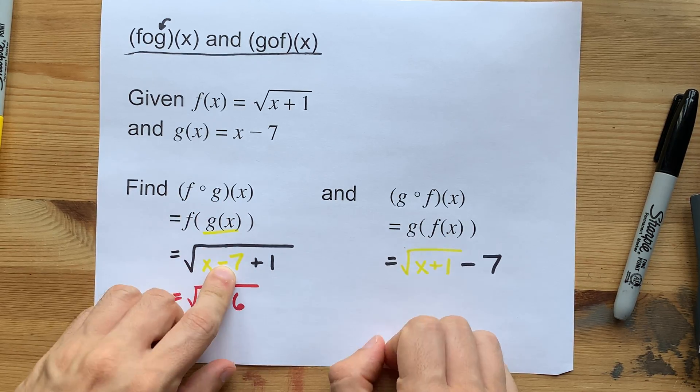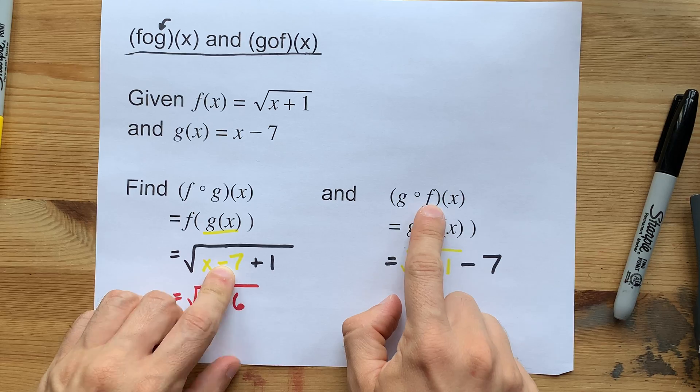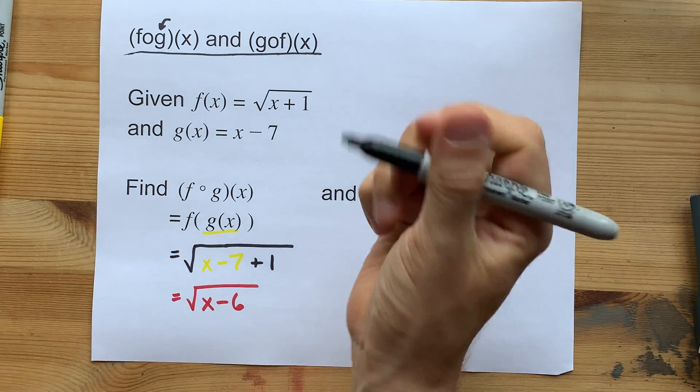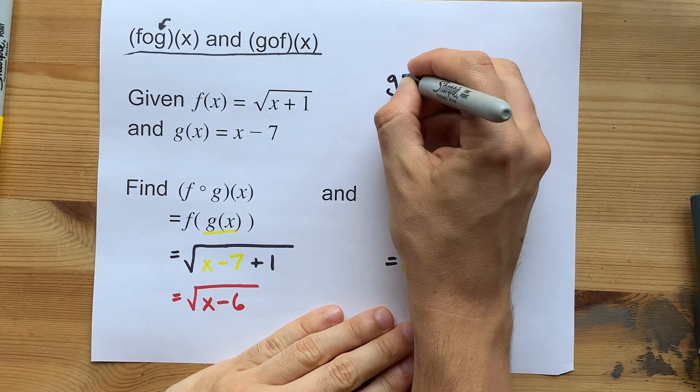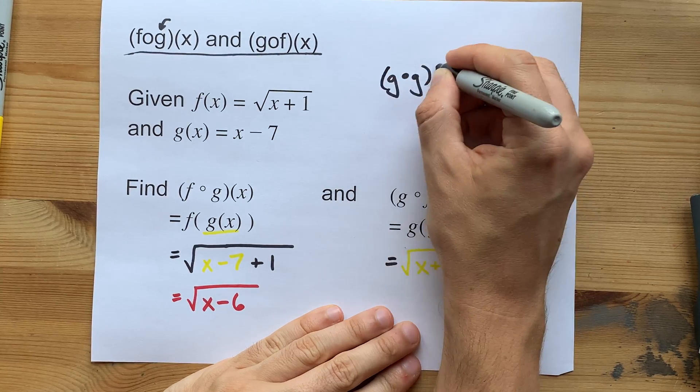you're replacing all of those x's with whatever the function is that you're taking it of. f of g, replace x with g. g of f, replace x with f. You're even allowed to do things like g of g of x.